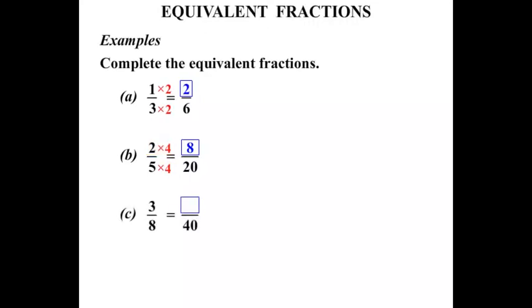The next one, 3 eighths equals something over 40. So our denominators, we know both of them. So let's consider 8 to turn it into a 40. We times by 5. We times the bottom by 5. Let's times the top by 5 as well. And 3 times 5 is 15.